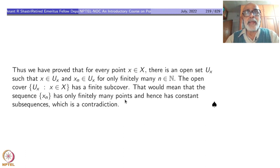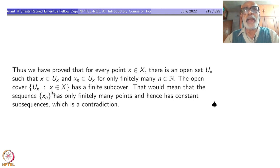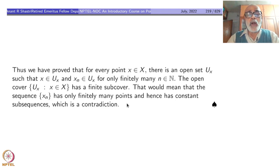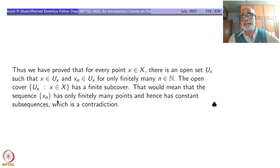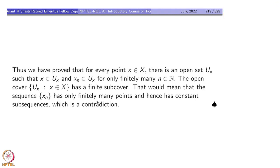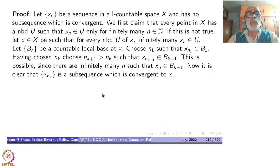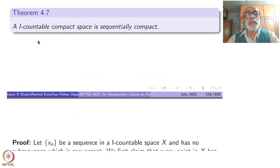Thus, for every point X in X there is an open set UX containing X such that Xn ∈ UX for only finitely many n. Now look at the open cover {UX : X ∈ X}. This has a finite subcover since X is compact — compactness enters only here. That means the sequence Xn has only finitely many distinct points, contained inside finitely many sets UX1, ..., UXK, each containing only finitely many terms. Hence there is a constant subsequence — a contradiction. So we have proved: a first countable compact space is sequentially compact.